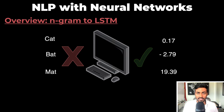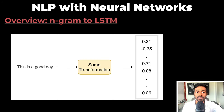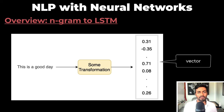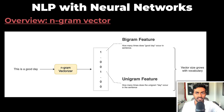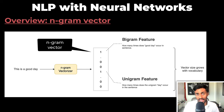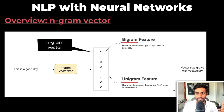Computers cannot process words, but they can process numbers. So words need to be converted into some numerical representation. Typically, they are converted into vectors or embeddings. These vectors are n×1 matrices. And we can convert a sentence into a vector known as an n-gram vector, where every position in this vector is a count of the unigrams, bigrams, trigrams, and so on that are present in the sentence.